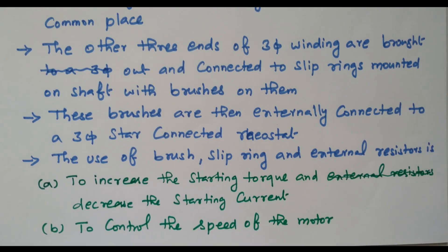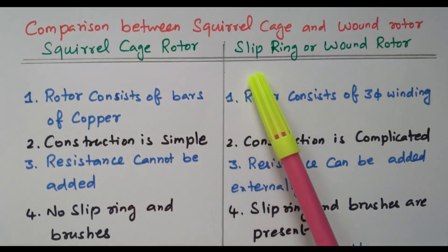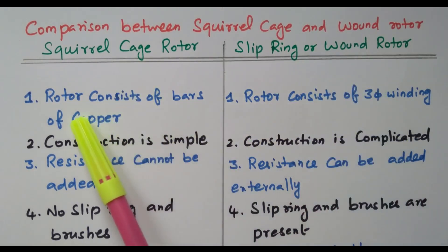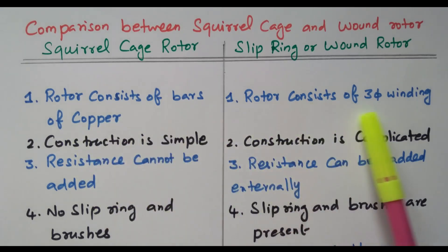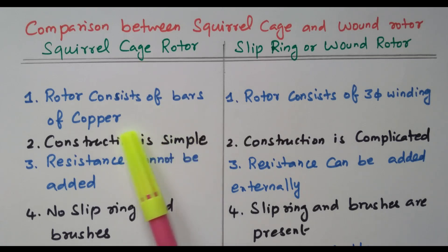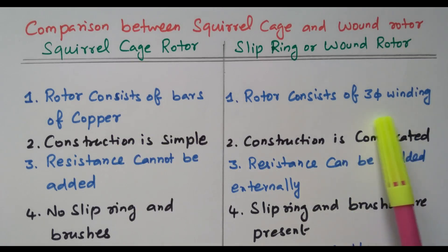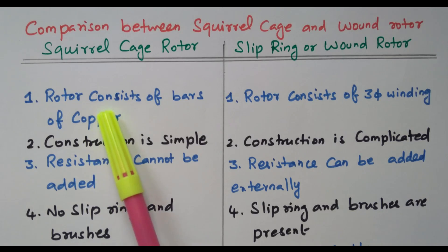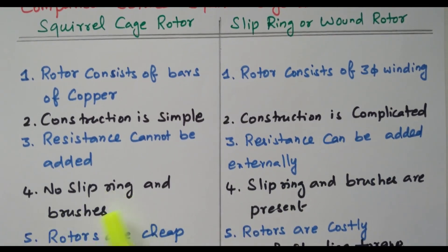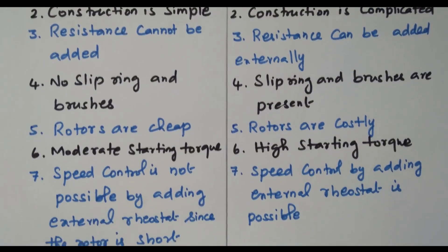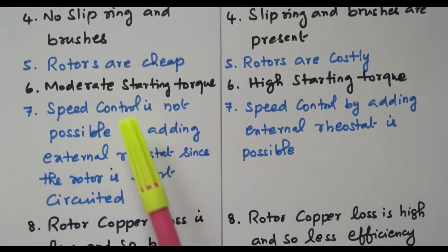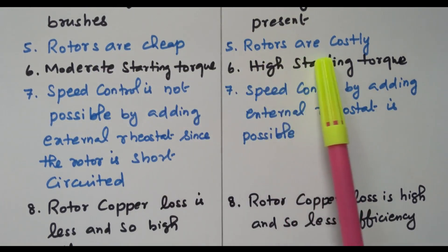Now we will compare the squirrel cage rotor and the slip ring or phase wound rotor. In the squirrel cage rotor, the rotor consists of copper bars, whereas in the slip ring rotor, a three-phase winding is available. The construction of the squirrel cage rotor is simple — copper bars are placed during construction with no alteration needed — but the slip ring rotor construction is complicated because three-phase winding must be placed. In the squirrel cage rotor, external resistance cannot be added; in the slip ring rotor, external resistance can be added. The squirrel cage rotor has no slip ring and brush; the slip ring rotor requires both, and is therefore more costly.